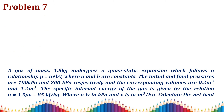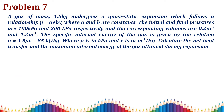Problem 7. A gas of mass 1.5 kg undergoes a quasi-static expansion which follows a relationship p = a + bV, where a and b are constants. The initial and final pressures are 100 kPa and 200 kPa respectively, and the corresponding volumes are 0.2 m³ and 1.2 m³. The specific internal energy of the gas is given by the relation u = 1.5pv − 85 kJ/kg, where p is in kPa and v is in m³/kg.